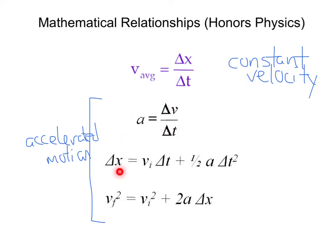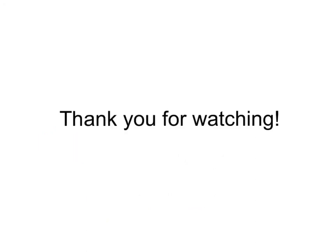We just derived this change in position equals V_i T plus one half AT squared. And there's a fourth relationship, which I won't derive, and we'll just state as V_f squared equals V_i squared plus 2A delta X. Thank you for watching and see you in class.